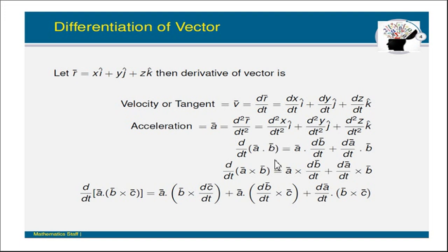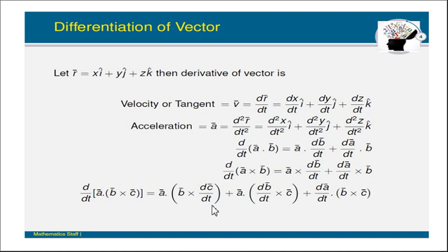Similarly, we can take the derivative of a-bar dot b-bar, which equals a-bar dot (db-bar/dt) plus (da-bar/dt) dot b-bar. And the derivative of a-bar cross b-bar equals a-bar cross (db-bar/dt) plus (da-bar/dt) cross b-bar. The derivative of the scalar triple product d/dt [a-bar dot (b-bar cross c-bar)] equals a-bar dot (b-bar cross dc-bar/dt) plus a-bar dot (db-bar/dt cross c-bar) plus (da-bar/dt) dot (b-bar cross c-bar).